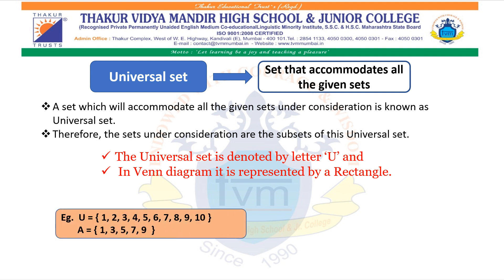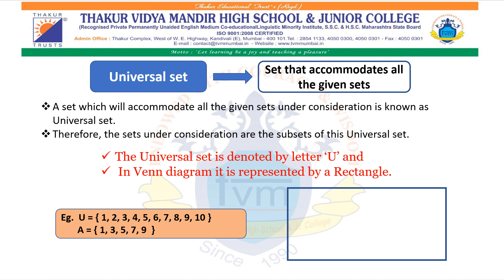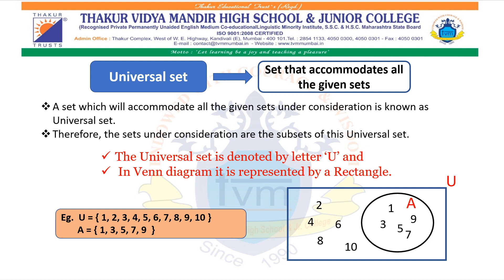Let us see one example. U is the set of first natural numbers from 1 to 10, and A is a set of {1, 3, 5, 7, 9}. To represent this in a Venn diagram, for the universal set we take a rectangle labeled U and write all its elements in it. The elements of set A — 1, 3, 5, 7 — will be grouped inside the universal set and written as set A.